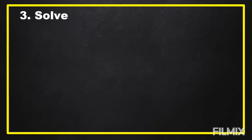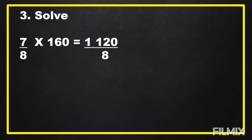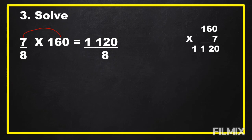The next step is we are going to carry out the plan, or we are going to solve. Multiply 7/8 times 160, and it gives the result of 1120/8. We multiply 7 times 160 and the result is equal to 1120, then just copy the denominator 8 as our product.